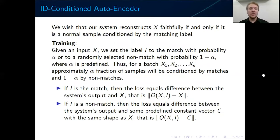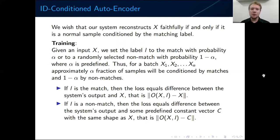We wish our system to reconstruct x faithfully if and only if it is a normal sample conditioned by the matching label. Given an input x — a normal sample, since we train only on normal samples — we set the label L to match with probability alpha, or to non-match with probability 1 minus alpha. If we have a match, we expect the system to reconstruct x. If we have a non-match, we expect the system to reconstruct the constant vector c. The vector c is analogous to the rubbish from the class-conditioned autoencoder: given a match it behaves like a normal autoencoder, and given a non-match it should output the constant vector c.